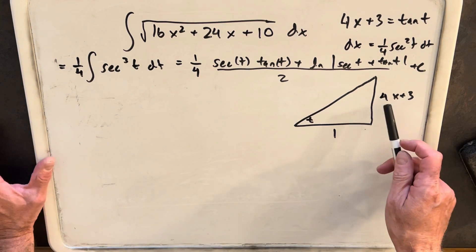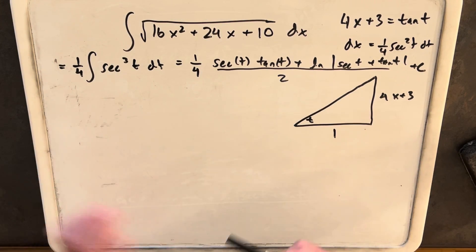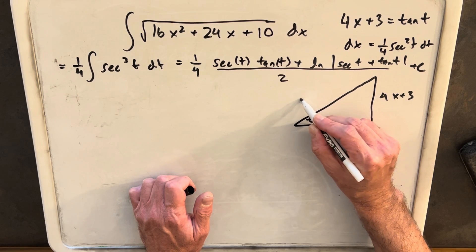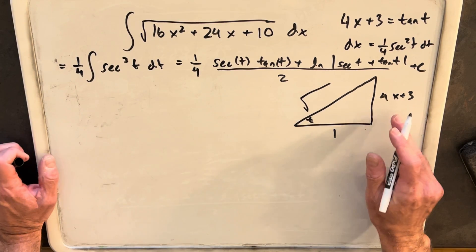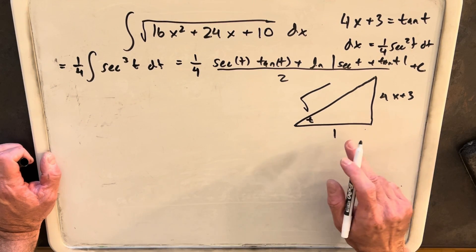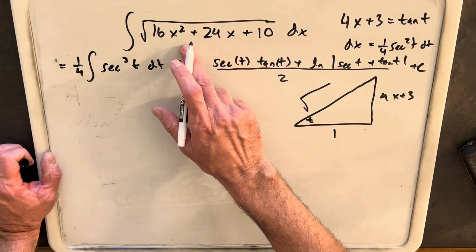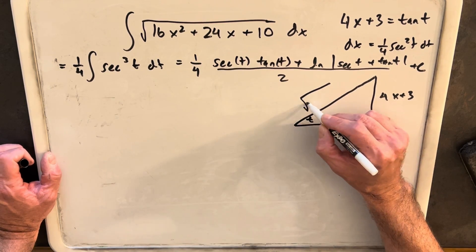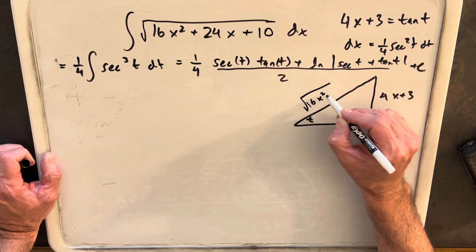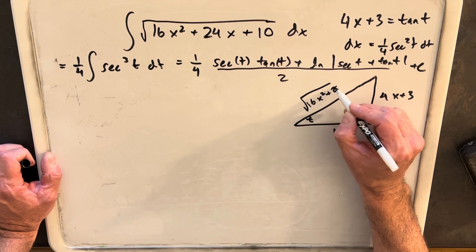And with the Pythagorean theorem, a squared plus b squared equals c squared, we know that here our hypotenuse has to be 4x plus 3 squared plus 1 squared. But we already did that. That was what we did initially to break this down. So we end up with the same, like our original integral right here on the hypotenuse.